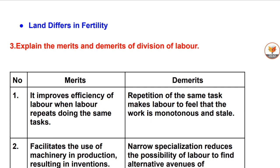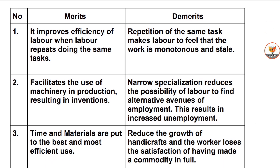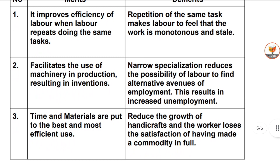Question 3: Explain the merits and demerits of division of labor. Merits: it improves the efficiency of labor when labor repeats doing the same tasks; facilitates the use of machinery in production; results in inventions; time and materials are put to the best and most efficient use. Demerits: repetition of the same task makes labor feel the work is monotonous and stale; narrow specialization reduces the possibility of labor finding alternative avenues of employment, resulting in increased unemployment; reduces the growth of handicrafts and the worker loses satisfaction of having made a commodity in full.